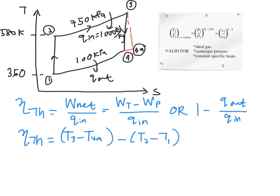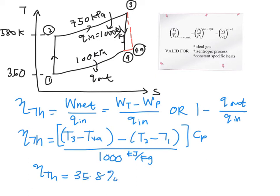And because you are dealing with, because you have your Qin in kilojoule per kg, you will need to times this with your Cp in order to cancel out the Kelvin in your temperature. And then finally, you will get your thermal cycle efficiency, which is equal to 35.8%.